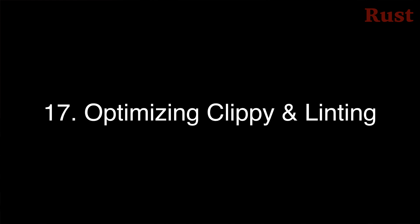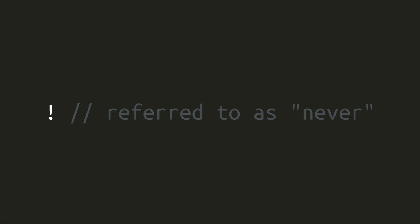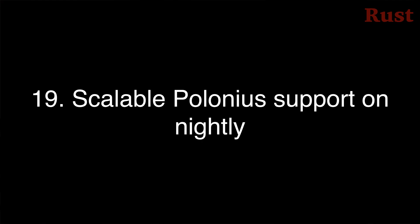Project 17 is optimizing Clippy and linting, also known as the Clippy Performance Project — an effort to make Clippy faster so linting takes less time, both on CI/CD pipelines and on developers' machines. Project 18 is to write an RFC proposing a design for matching never types and other uninhabited types. Project 19 aims to implement a native Rust-C version of the Polonius next-generation borrow checking algorithm so that borrow checking scales better than the previous Datalog implementation.